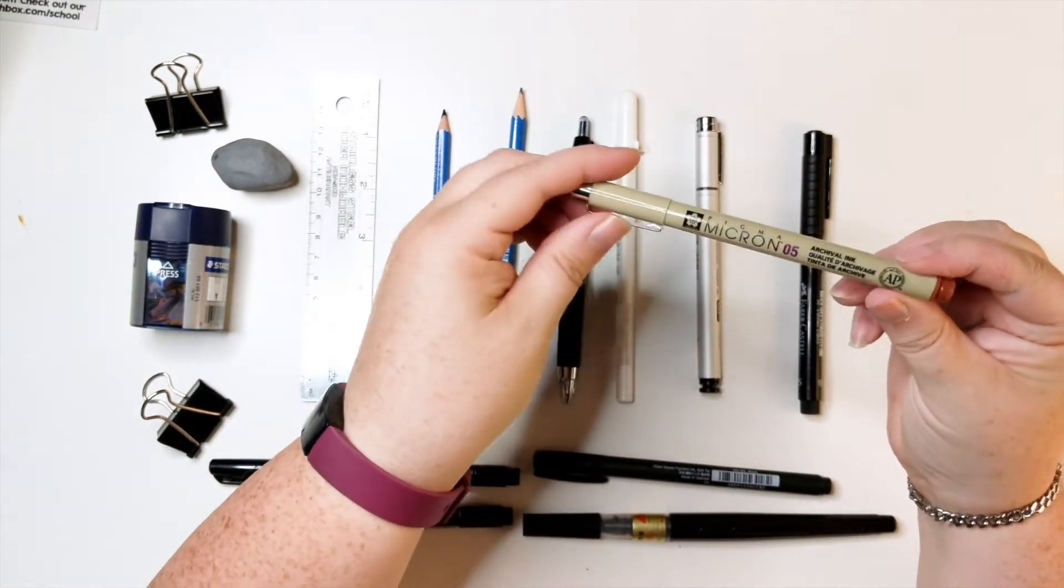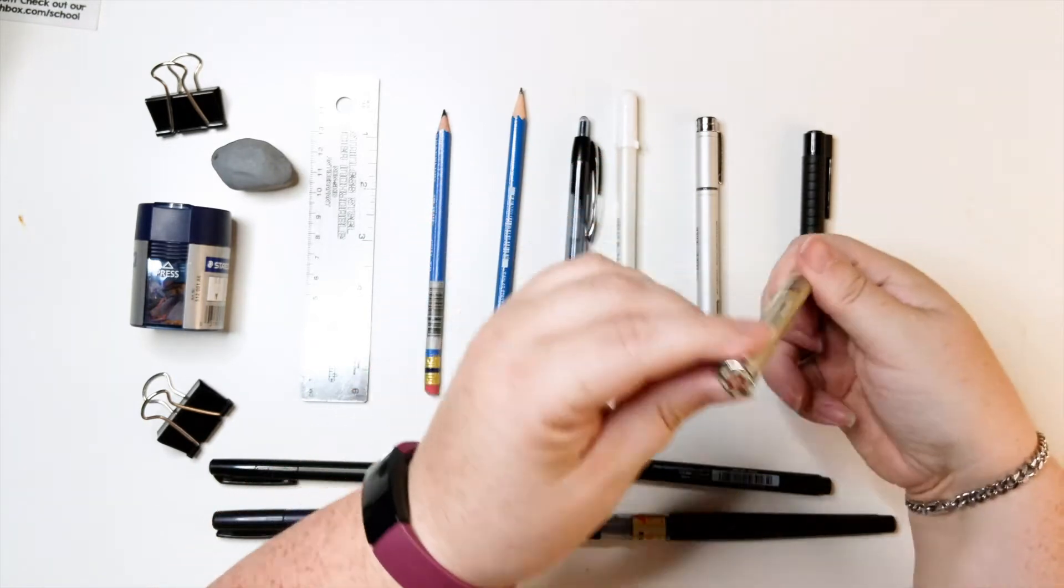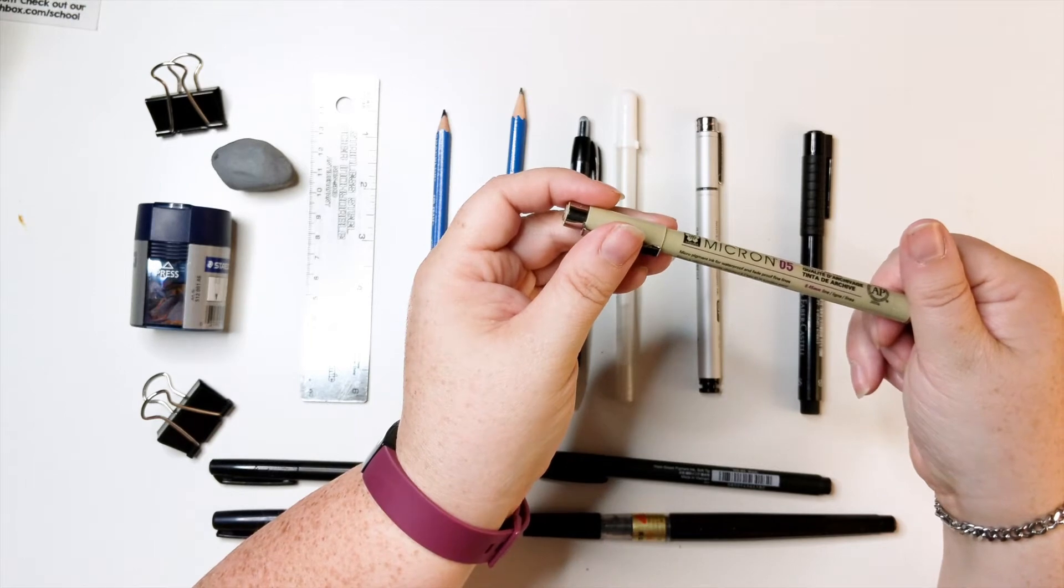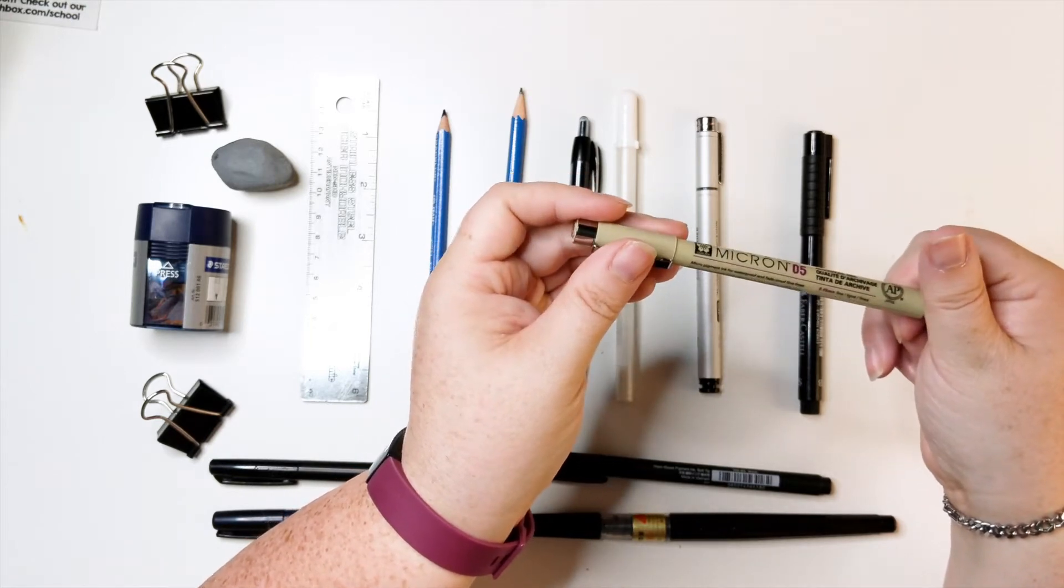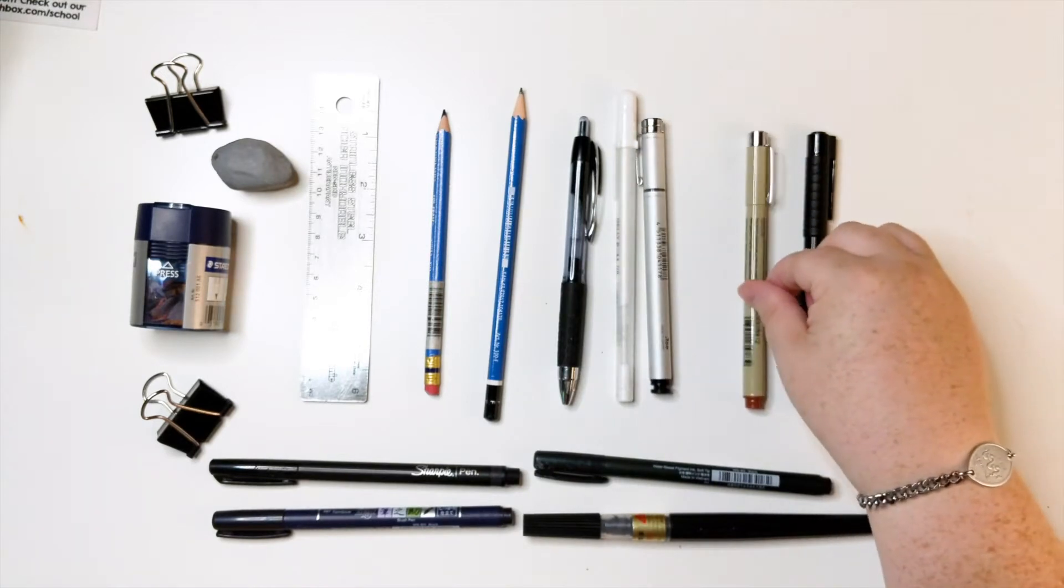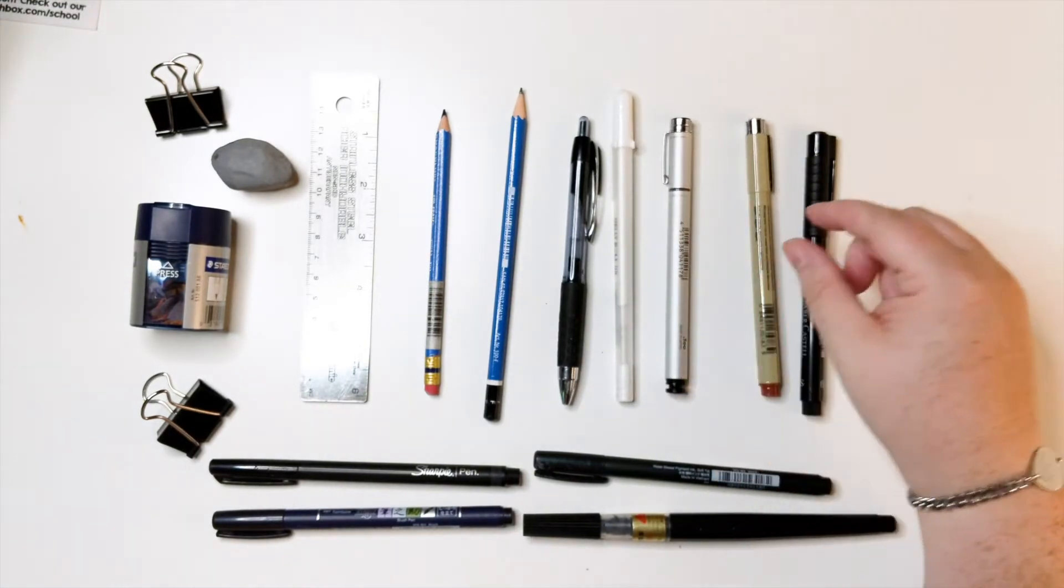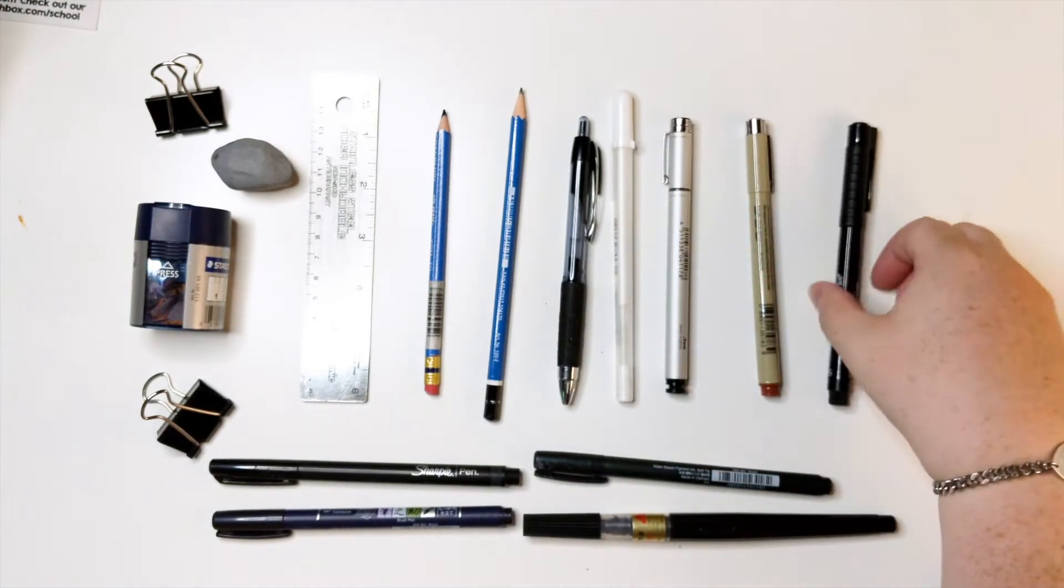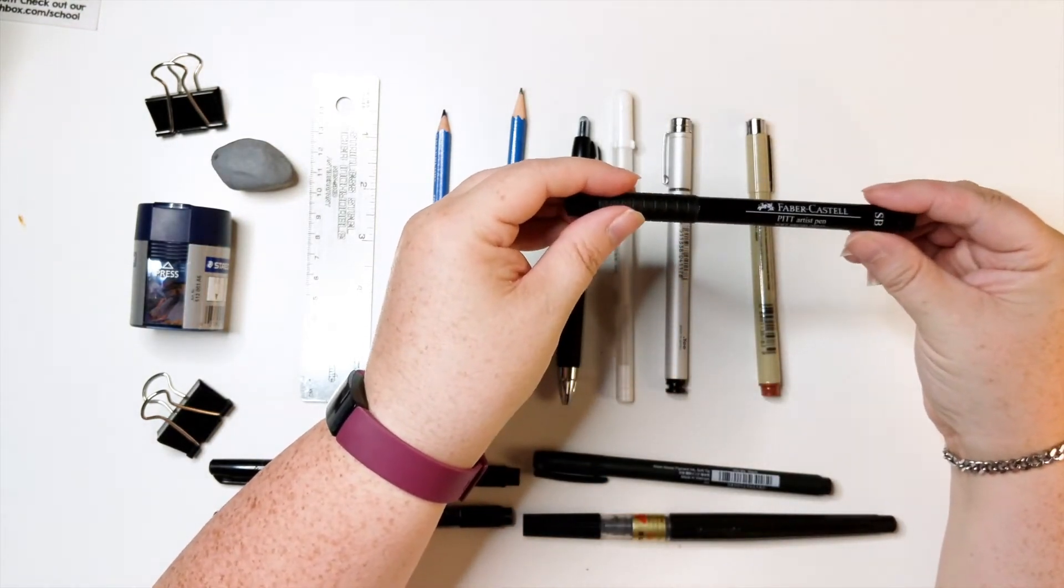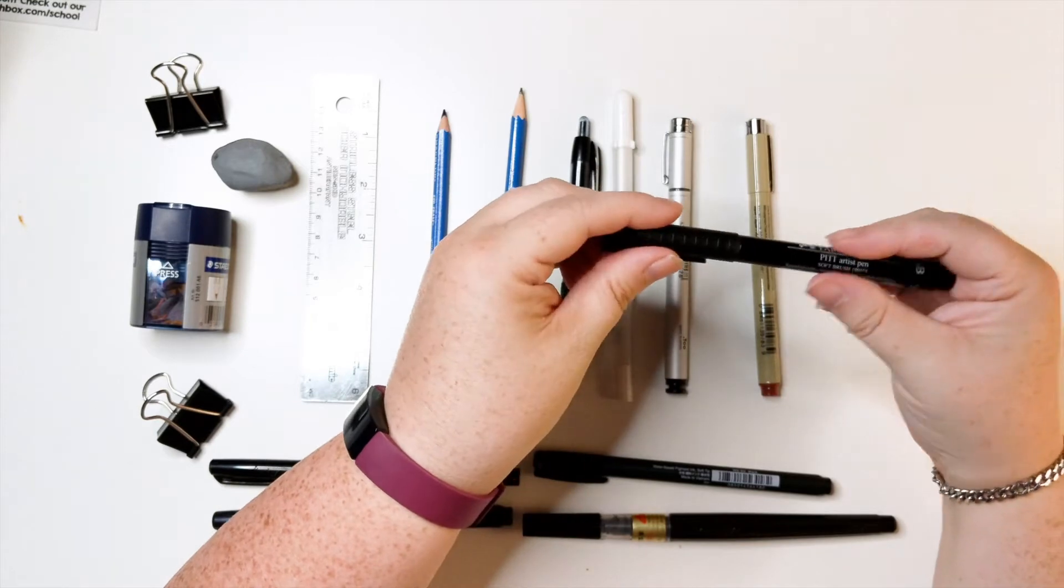So this is a Pigma Micron in a, what color is that? I forget what color it is. It's a brown though. Anyways, and that's nice when you just don't want to have a black line and I like using these Faber-Castell Pitt pens. It's a soft brush.